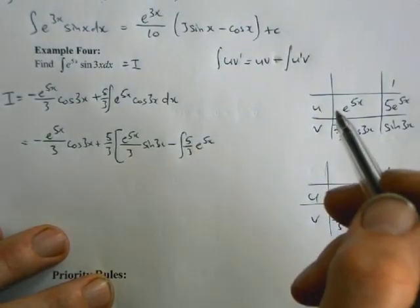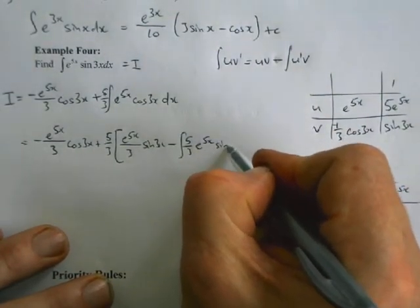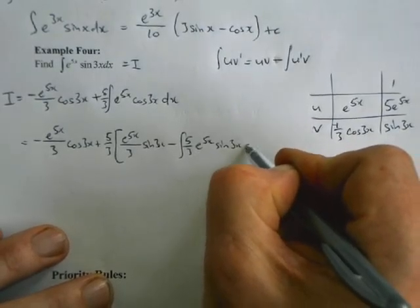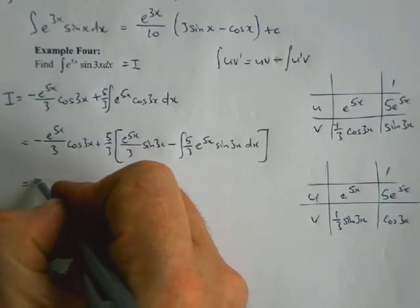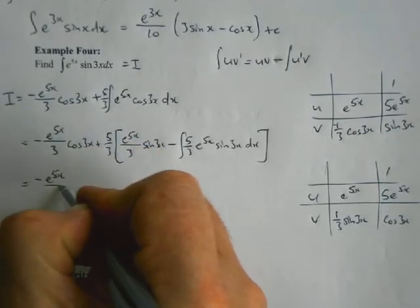Minus the integral of u dash times v, which will give me 5 thirds times 5 e to the 5x sine 3x.